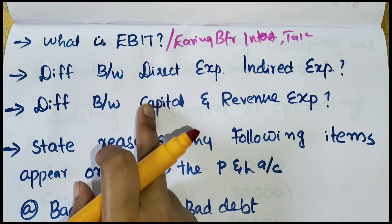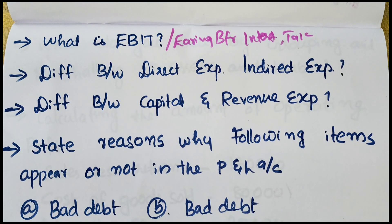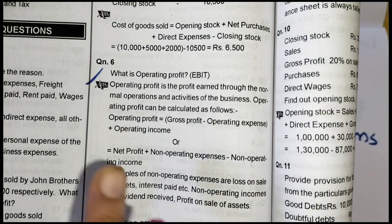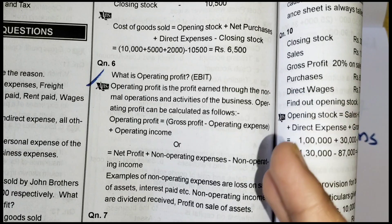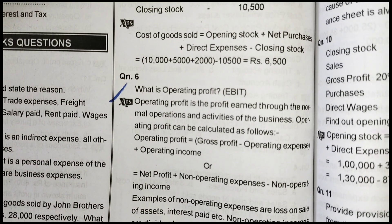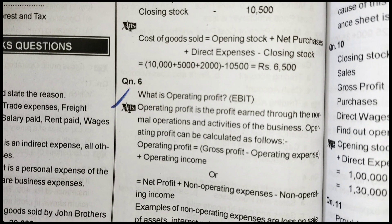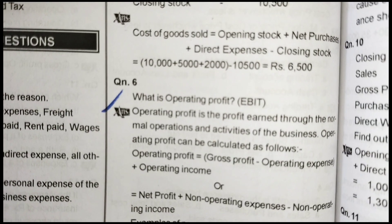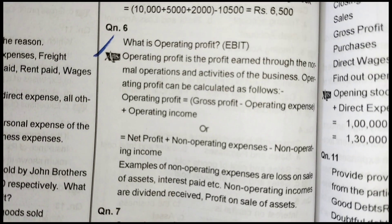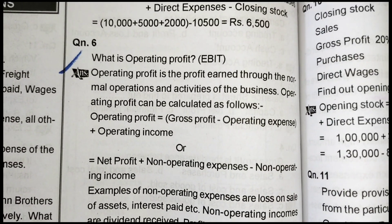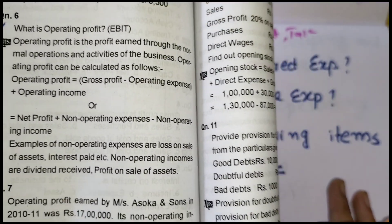What is operating profit? Operating profit is the profit earned through the normal operations or activities of the business, excluding non-operating items. The formula is: Operating Profit equals Gross Profit minus Operating Expenses plus Operating Income. Alternatively: Net Profit plus Non-Operating Expenses minus Non-Operating Income. EBIT is related to operating profit — the full form is Earnings Before Interest and Tax, where interest paid is an example of a non-operating expense.